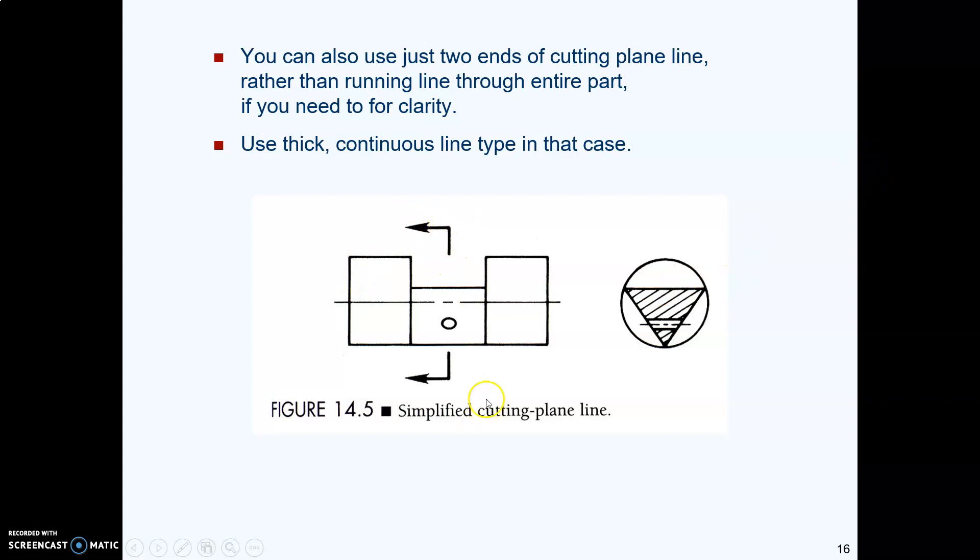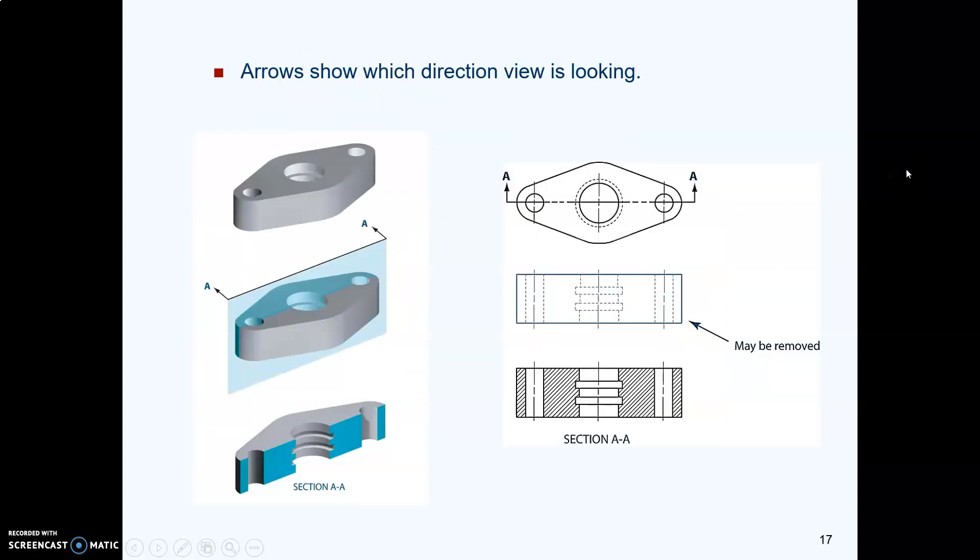You can just make a short section of cutting plane line on each side of the part. And if you do that, you don't use a phantom line. You just use a continuous thick line. And then the arrowheads show the reader which direction they are looking.